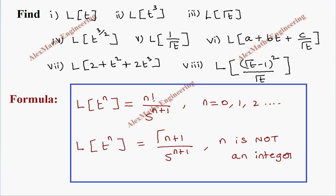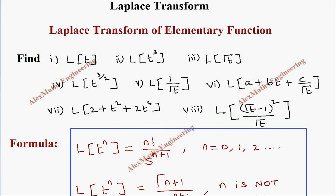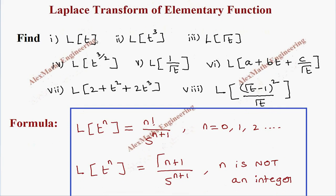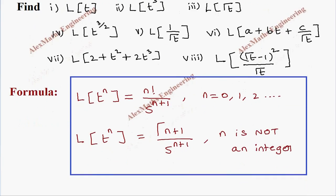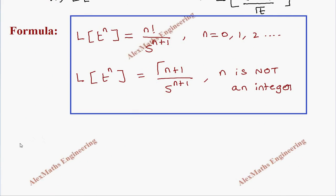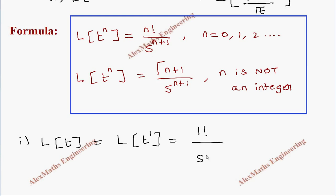Now let's take our first problem: Laplace transform of t. This is Laplace transform of t to the power 1, so the first formula is applicable with n equal to 1. By the formula, it is 1 factorial by s to the power 1 plus 1, which gives 1 by s squared.